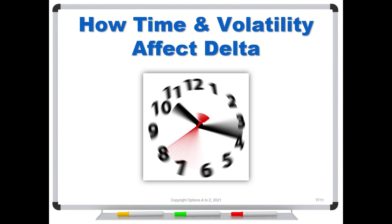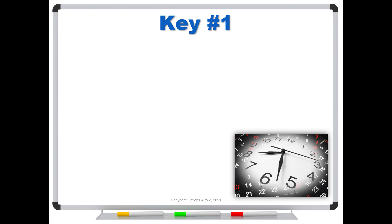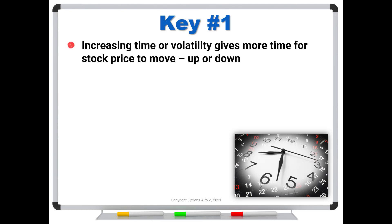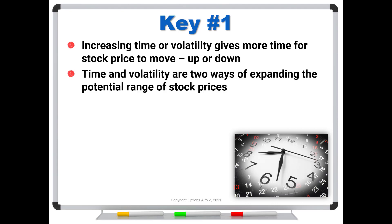Everybody knows how a stock's price will affect their deltas, and I do have other videos talking about that. But it can be a little tricky when you're trying to figure out how time and volatility are going to change your options deltas. Time and volatility are two ways of expanding the potential range of stock prices.